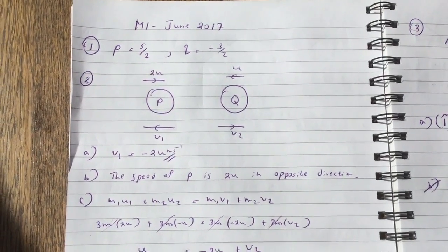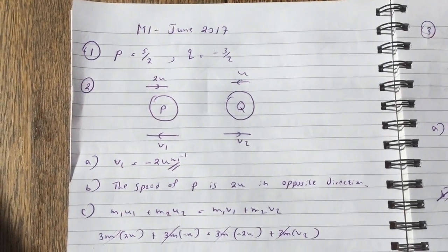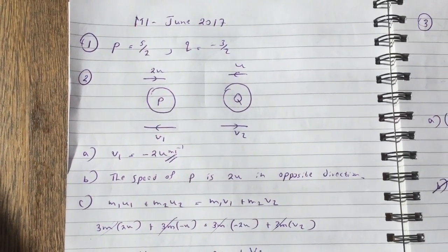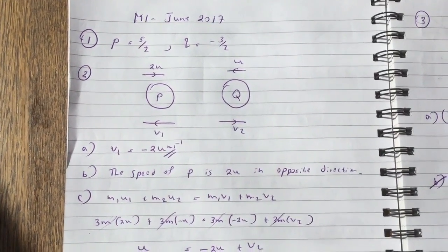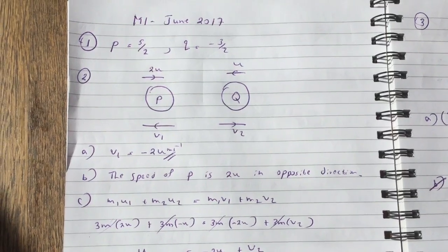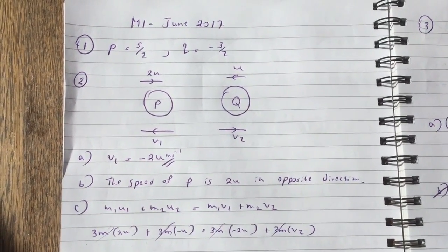Okay guys, these are the solutions for M1 June 2017 Edexcel. Question 1, so P equals 5 over 2, Q is equal to minus 3 over 2. It's a very simple question.